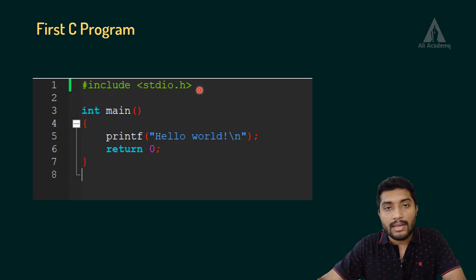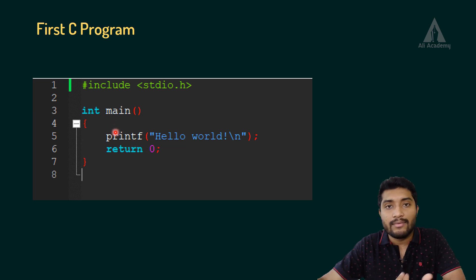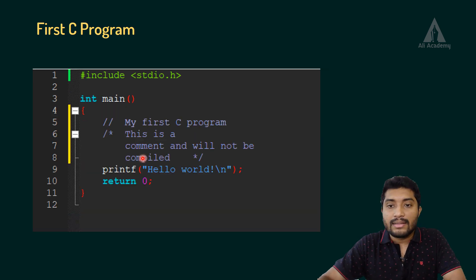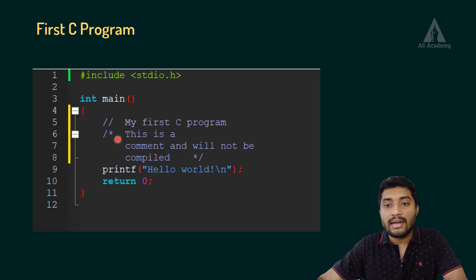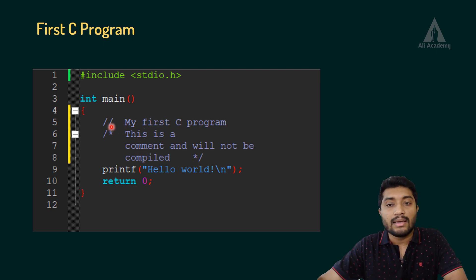Then we have the main function, then we may have statements or expressions, variables. Variables in the program — we use comments. So if you look at this program, we can have two types of comments: single-line comments using two slashes, and multi-line comments using slash asterisk and asterisk slash. The compiler excludes comments during compilation time.